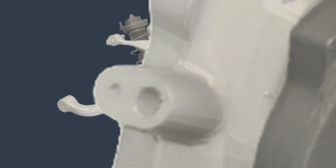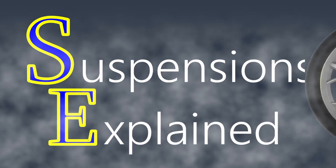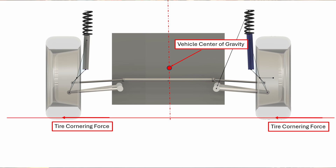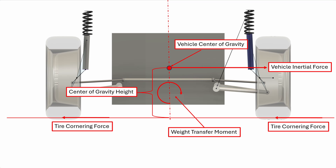I'm Hubert Mace, and this is Suspensions Explained. When a car enters a corner, the cornering forces acting at the left and the right tire contact patches, together with the inertial forces acting at the vehicle's center of gravity, cause a moment to be applied to the car, since they are not in line with each other.